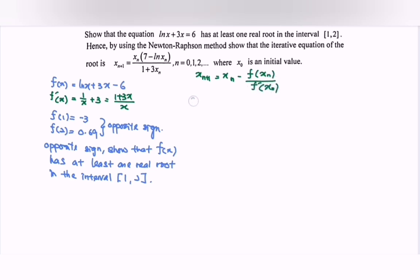xₙ₊₁ equals xₙ minus [ln xₙ + 3xₙ - 6] over [1 + 3xₙ]/xₙ. We write the situation.